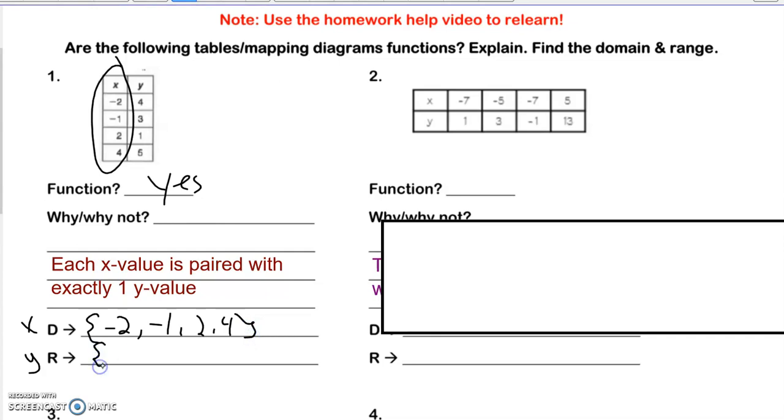And then for the range, again, I'm putting it in order from least to greatest. And I'm going to have 1, 3, 4, and 5.